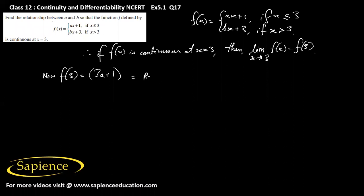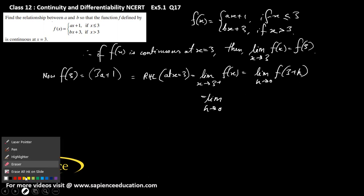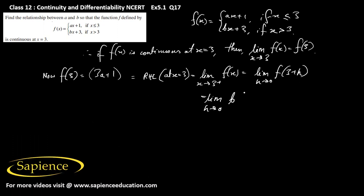That should be equal to the right-hand limit of the function at x = 3, which means limit as x tends to 3+ of f(x), equal to limit as h tends to 0 of f(3 + h). Since 3 + h is slightly more than 3, we use the second definition bx + 3, putting 3 + h in place of x: b(3 + h) + 3. Putting h = 0, that gives 3b + 3.